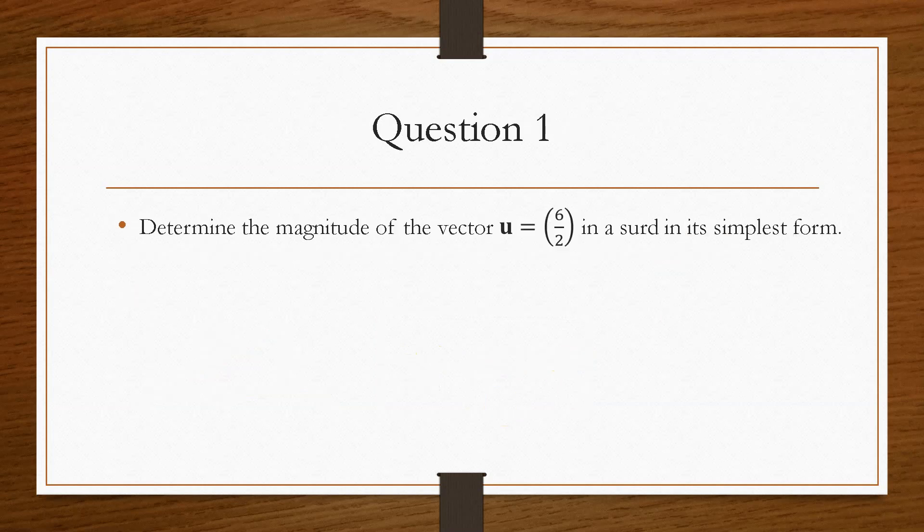So if we take a look at question one, it says determine the magnitude of vector u, which was the 6 and the 2, in a surd, in its simplest form. So the first thing we need to do is write down the equation for the magnitude. So that's going to be the square root of the value of a squared plus b squared.